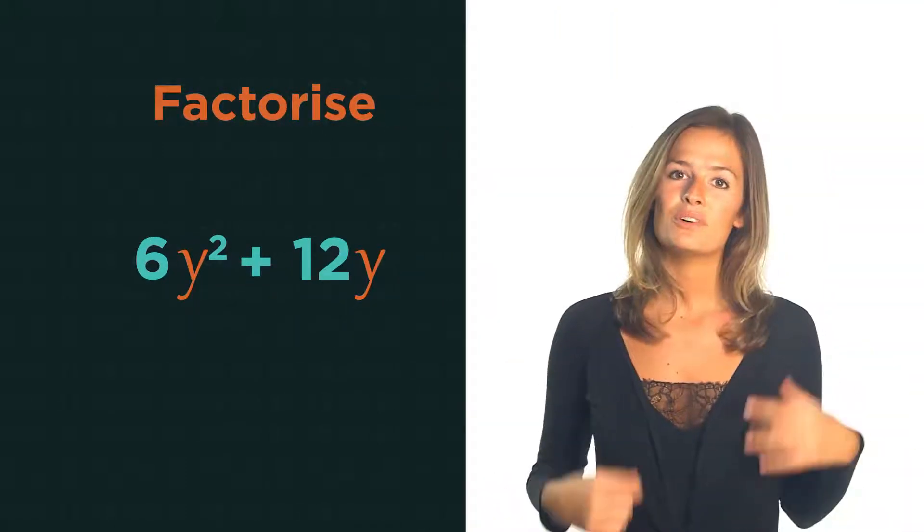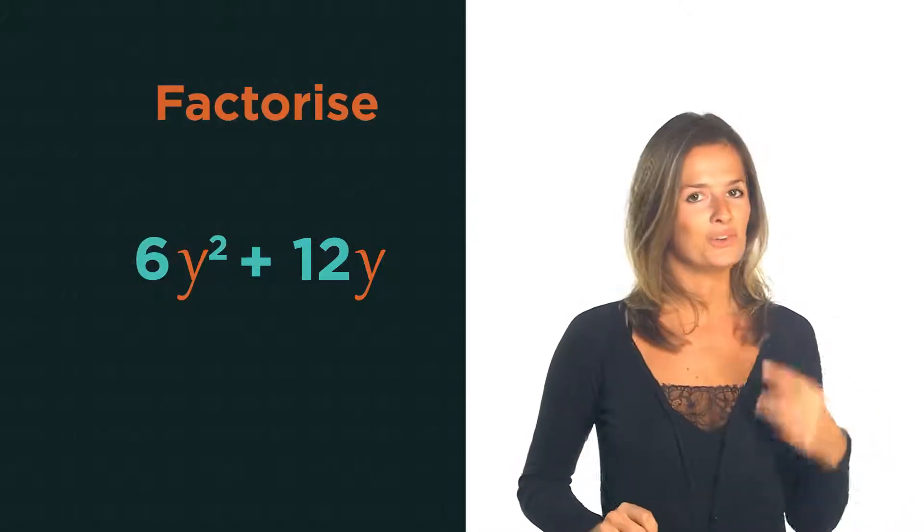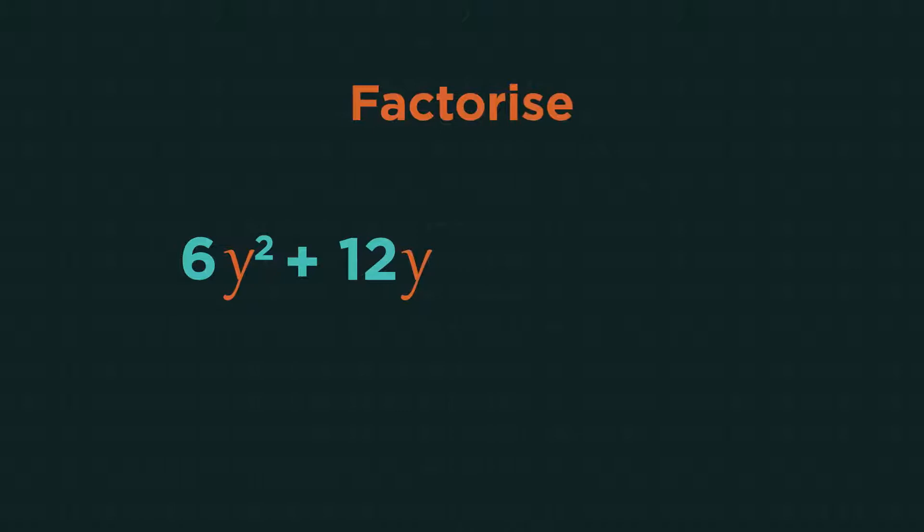So what about this example? What's the highest common factor of 6y squared and also 12y? So start with the numbers. What's the highest common factor of 6 and 12? 6, so 6 goes outside the brackets. Now what's the highest common factor of y squared and y? y, so y outside the bracket.